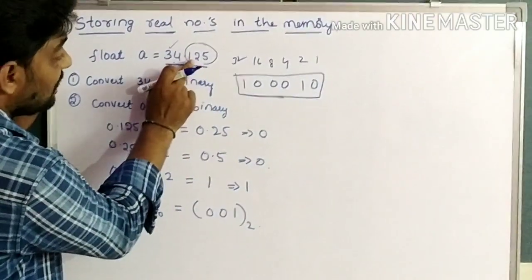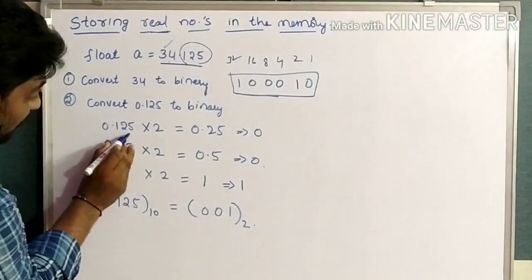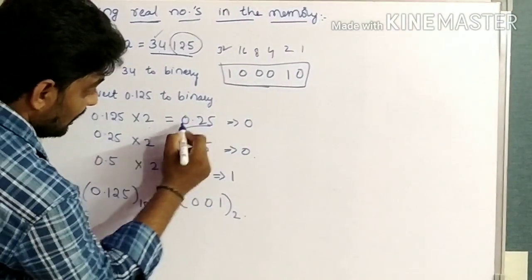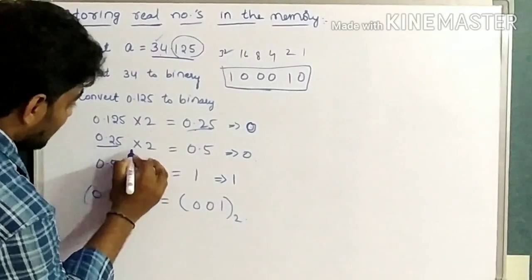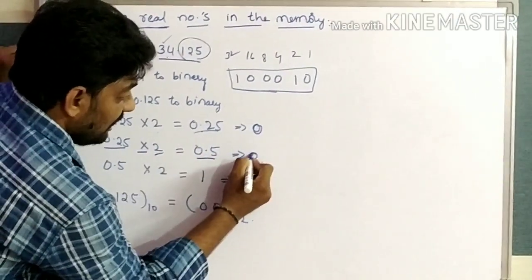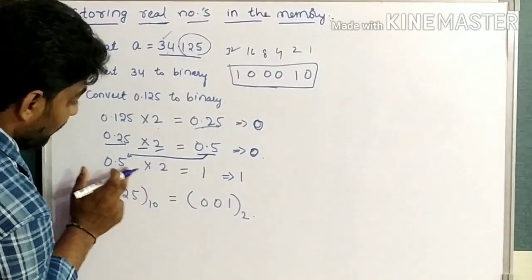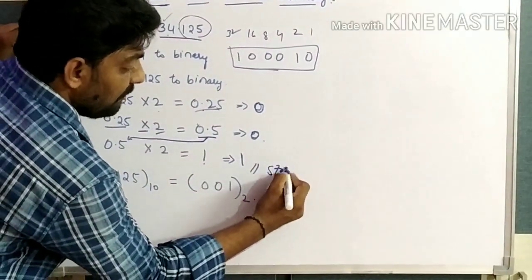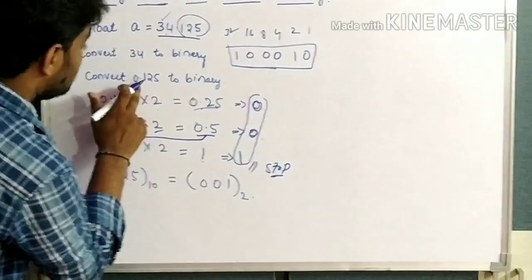Next we have to convert 0.125 into binary. Multiply 0.125 by 2 — that gives 0.25, so we write 0 here. Next, 0.25 into 2 gives 0.5, so we write another 0. Next, 0.5 into 2 gives 1, so we write 1 here. We stop when we get 1. So the binary value for 0.125 is 0.001.